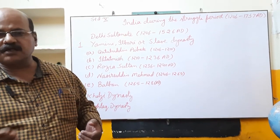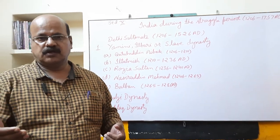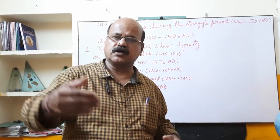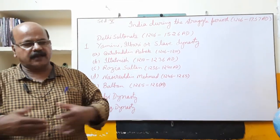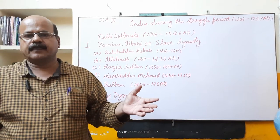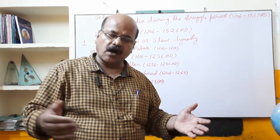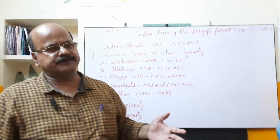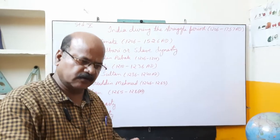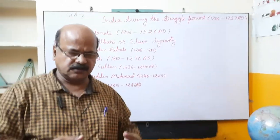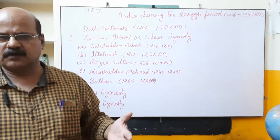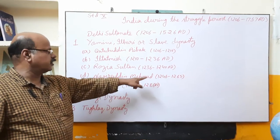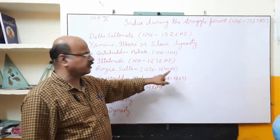Razia gave importance to an Abyssinian warrior named Yaqut and gave him an important post in her empire, which was another reason the Turkish nobles became annoyed with her. When Razia sent Yaqut in the campaign of Bhatinda, he was assassinated. Now Razia had to marry Altunia, but both died in 1240 AD. Then came Razia's two brothers, one after another, but they were not effective rulers.